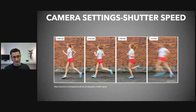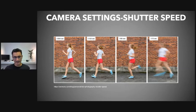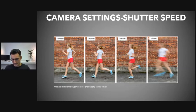The downside of increasing the shutter speed — making it faster — is that you get less light. If you get less light, then the photo doesn't come out as well. So you have to kind of balance those things out.